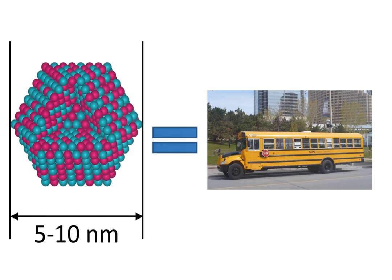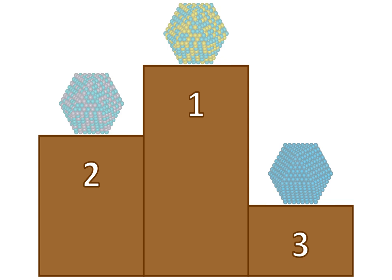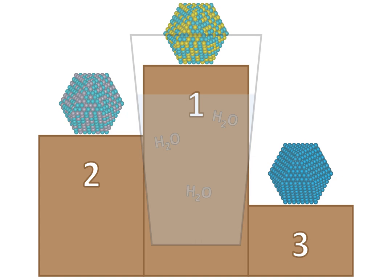We take these alloyed nanoparticles and use them in place of the palladium catalyst to destroy nitrate and nitrite. By monitoring the rate at which our catalysts destroy the contaminants and comparing these rates to each other and that of pure palladium, we can start to understand how the composition influences nitrate and nitrite reduction.